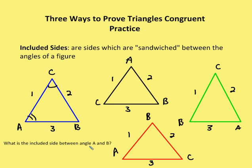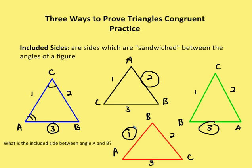The included side between angles A and B is side three for the blue triangle, side two for the black triangle, side three again for the green triangle, and side one for the red triangle.